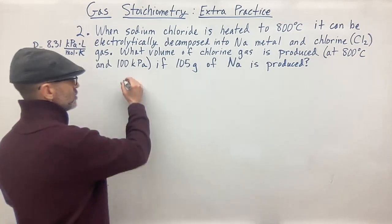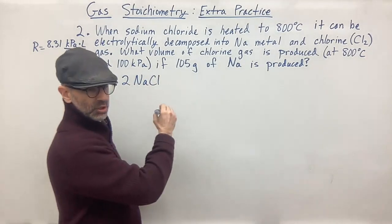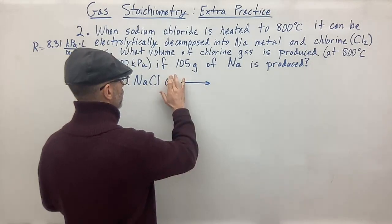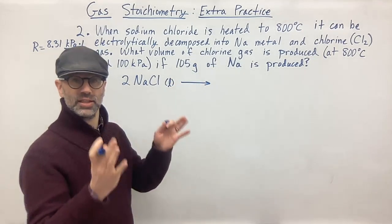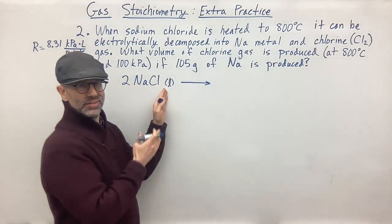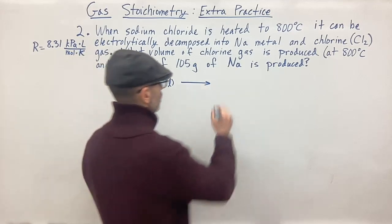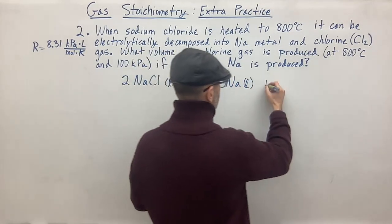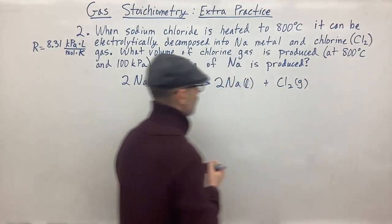Our balanced equation: 2 NaCl (liquid, since we heated it to melt it so it can electrolytically decompose) yields 2 Na (liquid) plus Cl2 (gas). Whether you write NaCl as solid or liquid, it won't affect the problem. So there's our balanced equation.